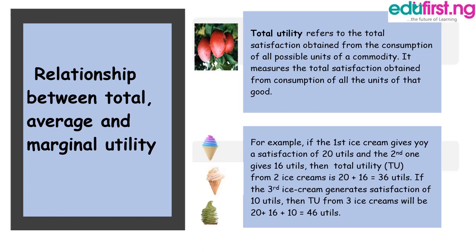Let's get started with the relationship between total, average, and marginal utility. We are going to understand this relationship by examining each of them one after the other. Total utility refers to the total satisfaction obtained from the consumption of all possible units of a commodity — that is, the addition of all the satisfaction derived from that particular good or service.